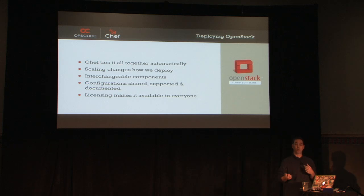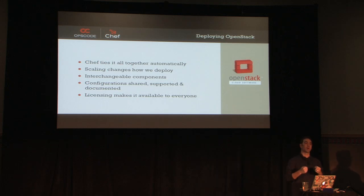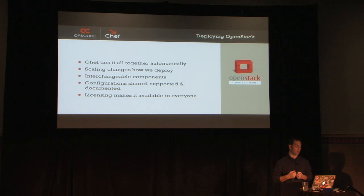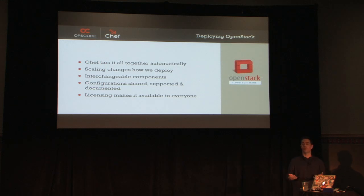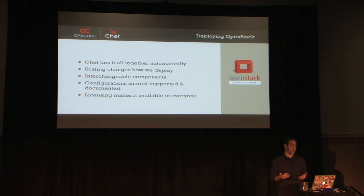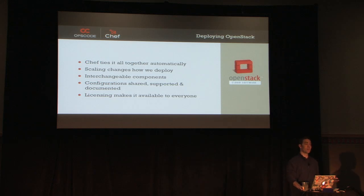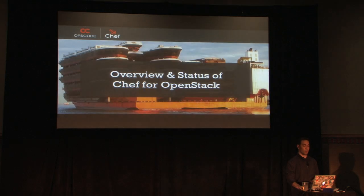The components become interchangeable because they're libraries — functional building blocks. If you want a different database, you just use a different database cookbook. The code is the documentation for your infrastructure; it tells how everything is put together. And since almost everything is under the Apache license, it's available for you to do whatever you want.